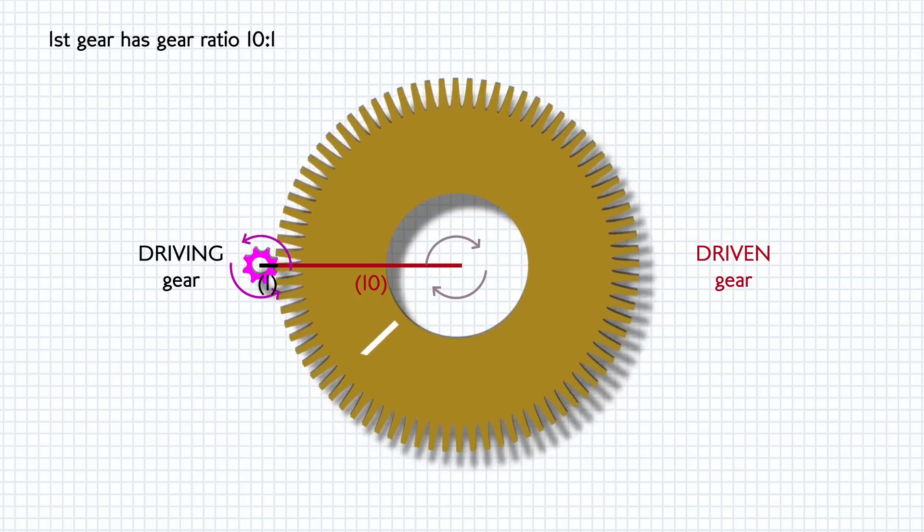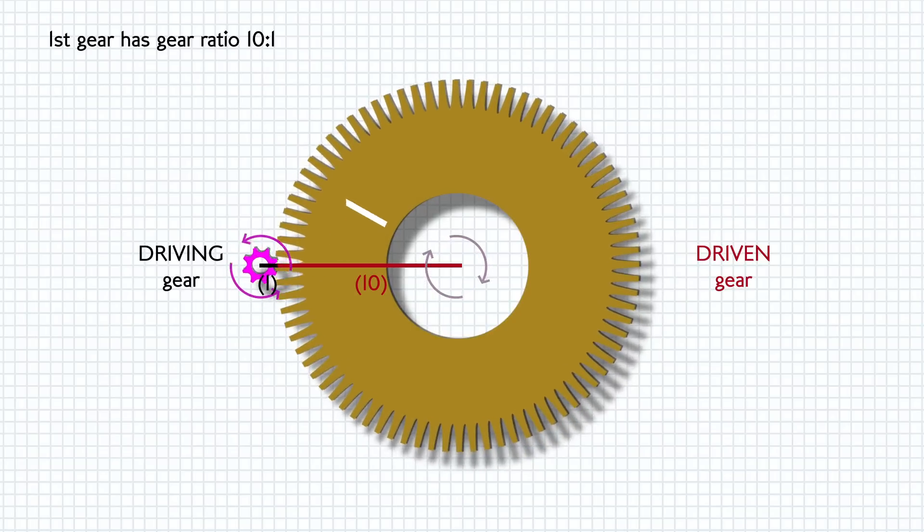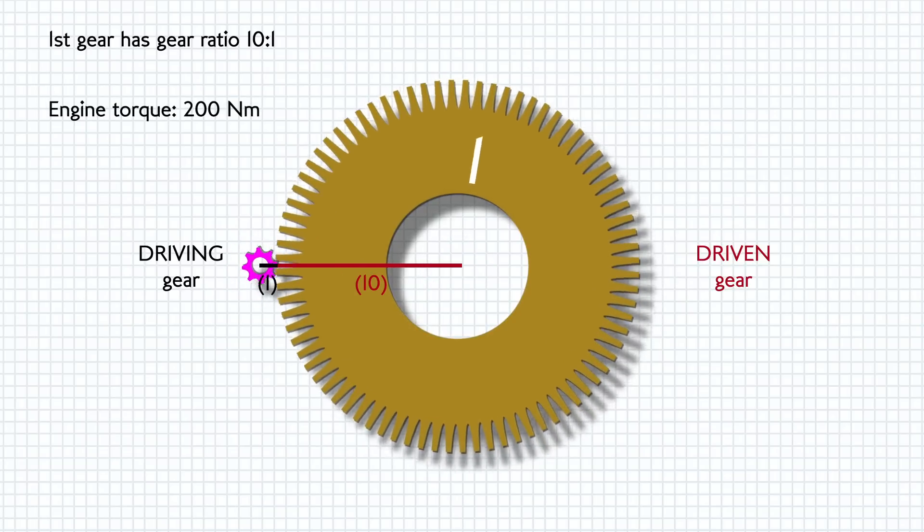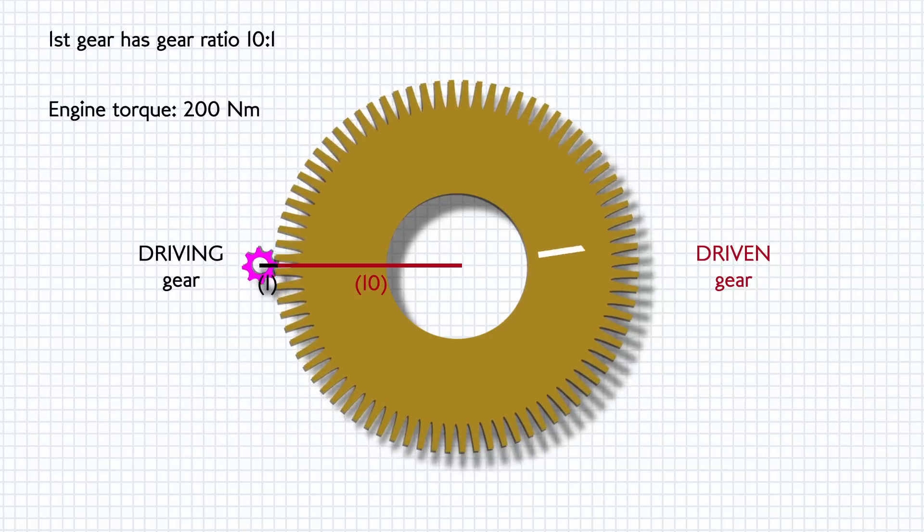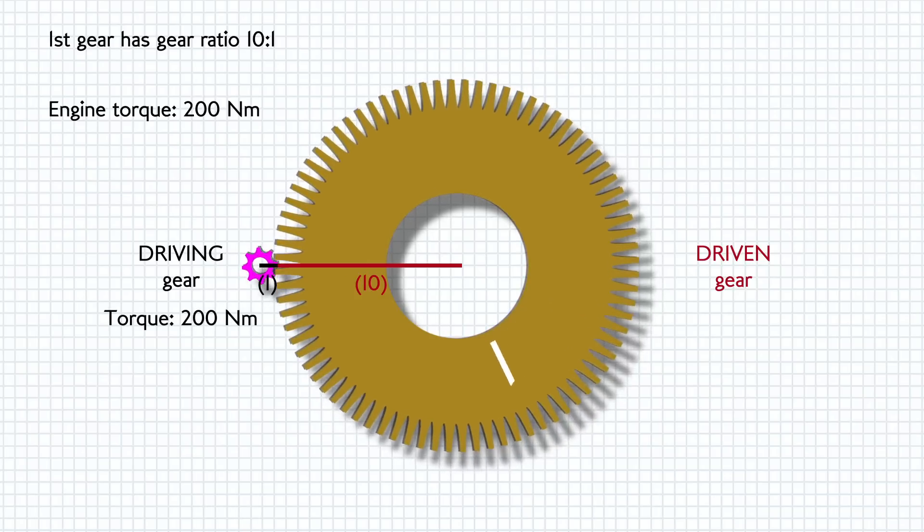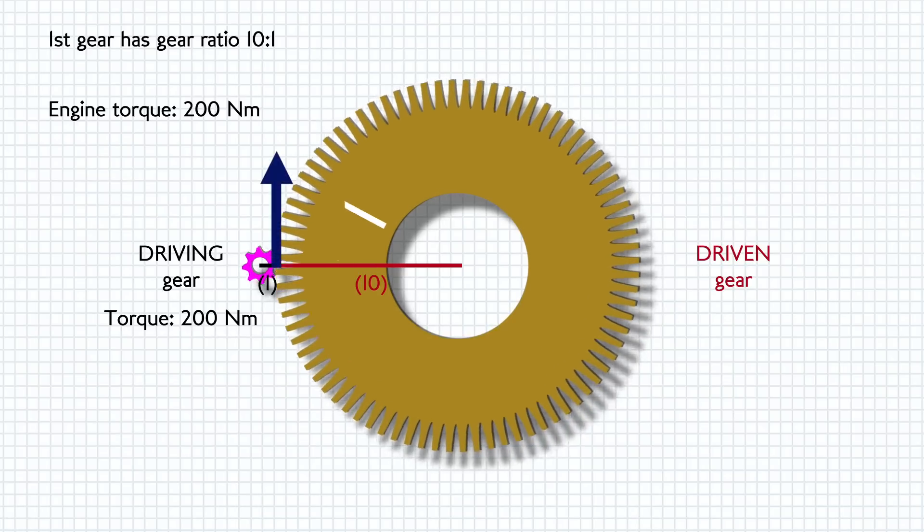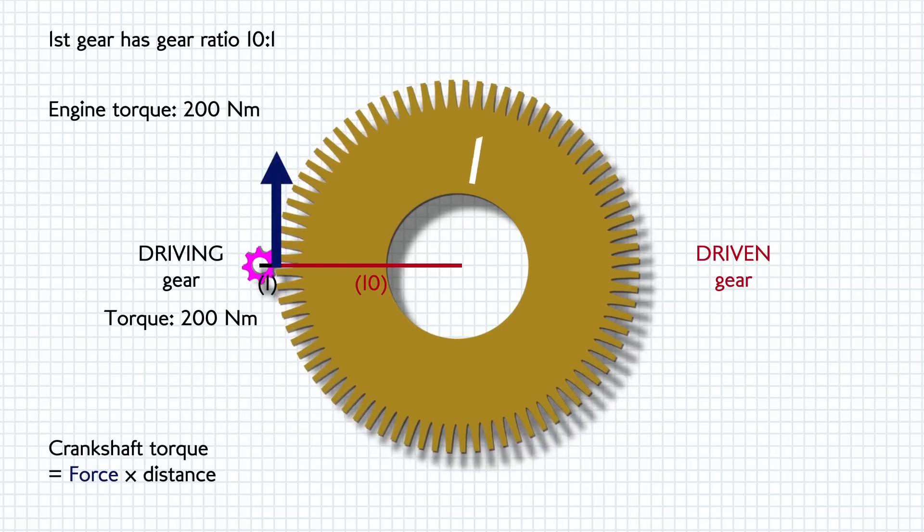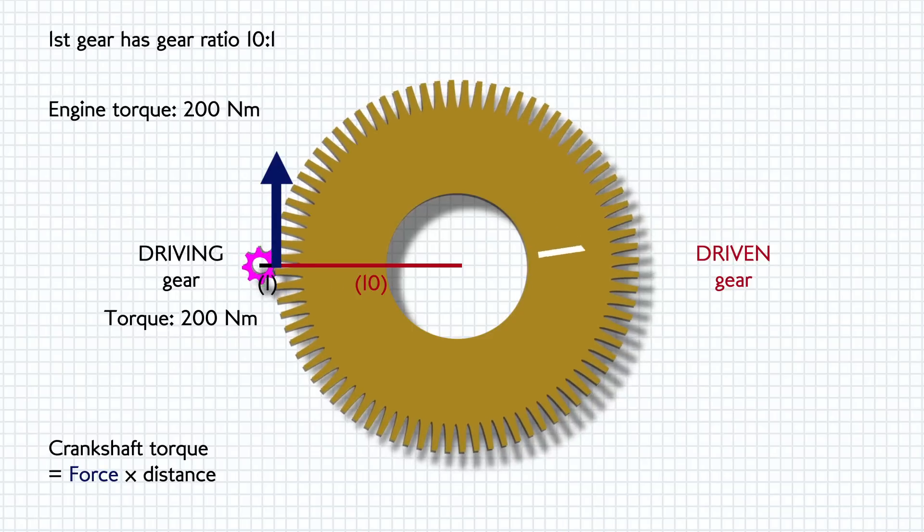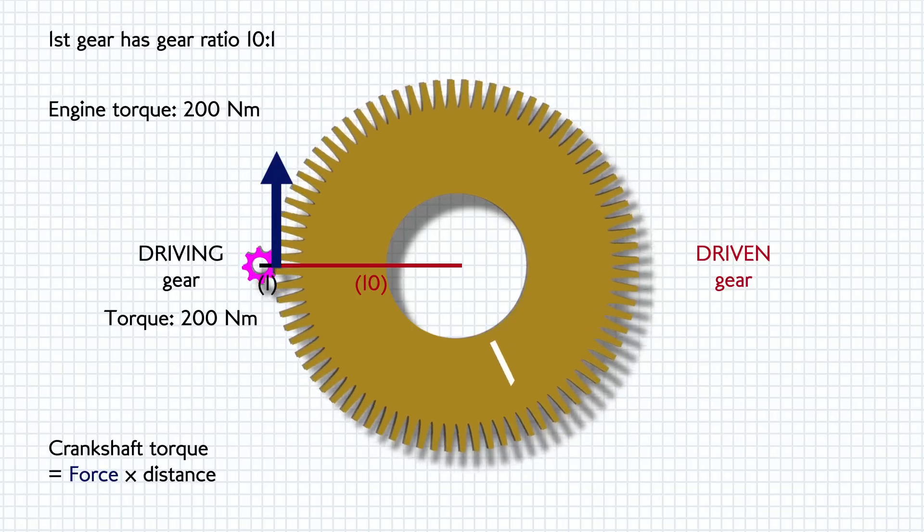The driving gear carries the torque of the crankshaft so if the engine is producing 200 newton metres of torque the driving gear at the crankshaft has 200 newton metres of torque. The two gears connecting means the teeth of the driving gear are pushing with a force on the teeth of the first gear. So the force where the two gears meet is the same obviously because they're connected by one force.